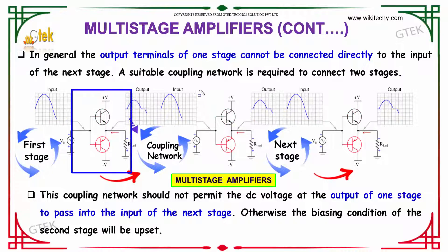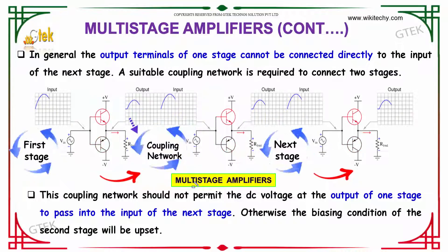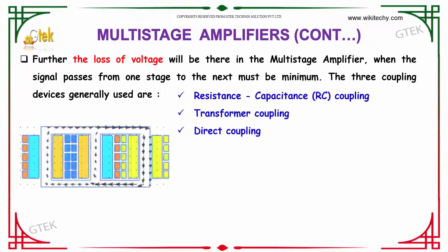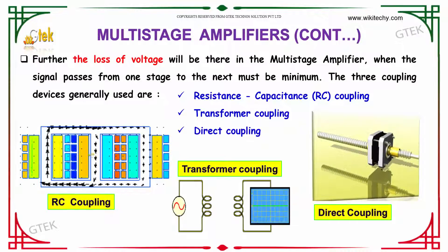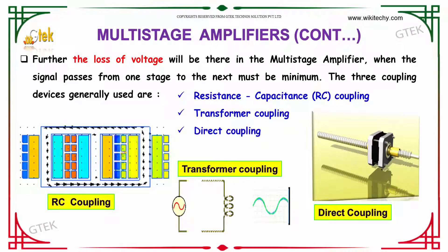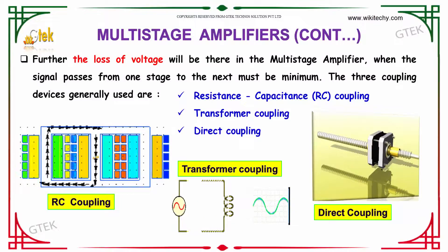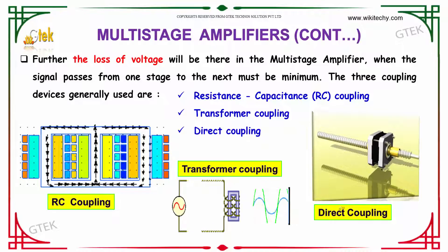One amplifier is connected to another amplifier with a coupling network in between. The loss of voltage in multistage amplifiers when the signal passes from one stage to the next must be minimum. The three coupling devices generally used are resistance-capacitance coupling, transformer coupling, and direct coupling.